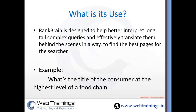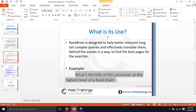What does RankBrain actually do? If you type a query like 'what's the title of consumer at the highest level of food chain,' when we see this query it doesn't immediately make sense. The query contains the word 'consumer' — as a normal user you might think it's related to some buyer. And with the word 'food chain,' it looks like the person is talking about a consumer who is buying in a food chain — that's what we might generally think.